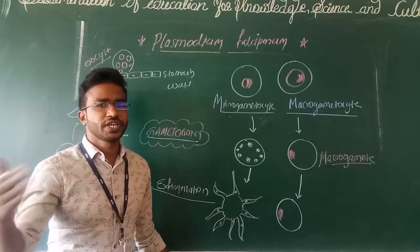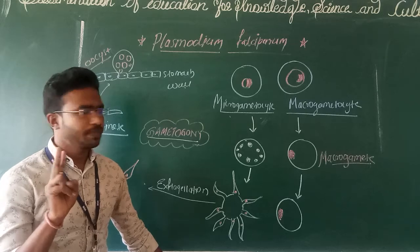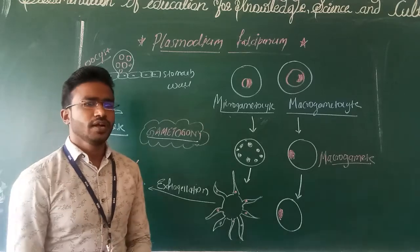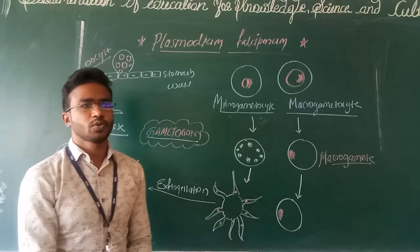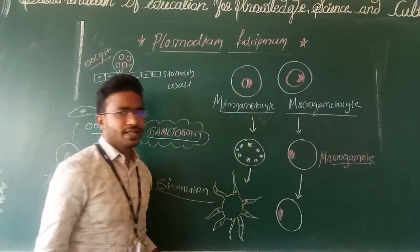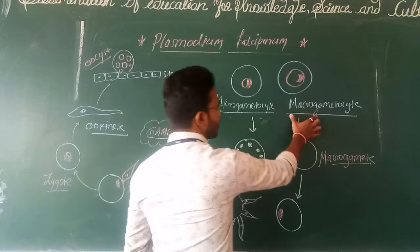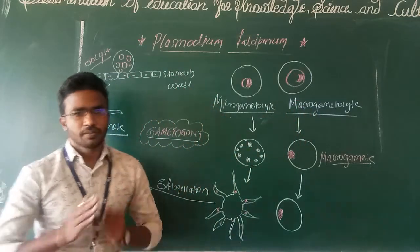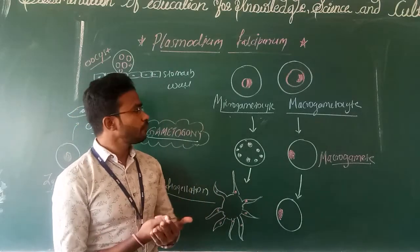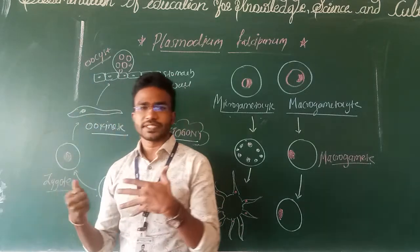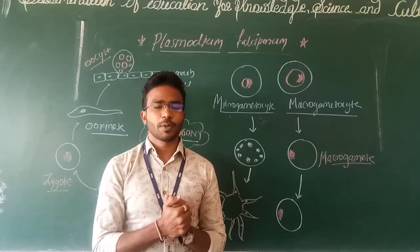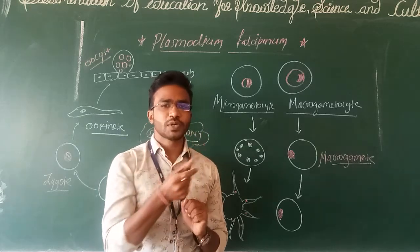The merozoites get differentiated into two types of cells: microgametocytes and macrogametocytes. These are two different types of cells — male cells and female cells. Microgametocytes are the male Plasmodium cells, and macrogametocytes are the female Plasmodium cells. When a mosquito sucks blood containing microgametocytes and macrogametocytes, these cells enter into the gut of the mosquito.